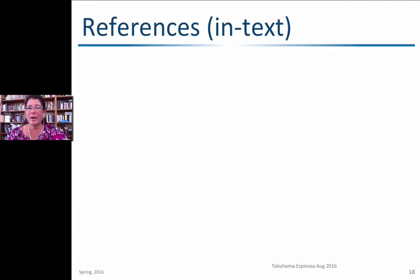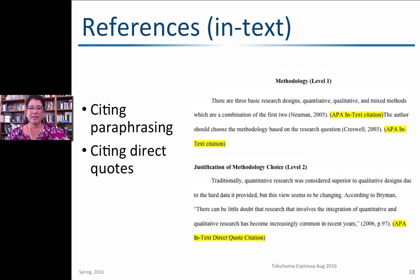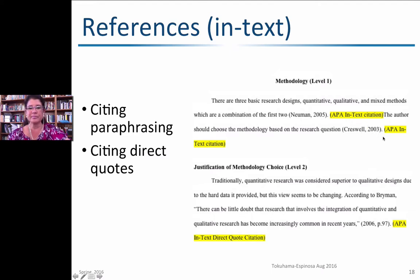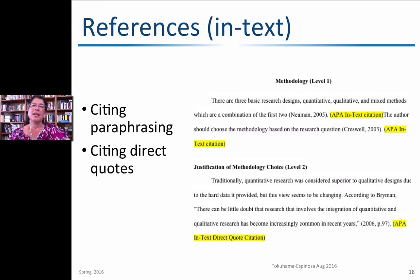The third big element of APA is how we reference things. An in-text reference is when you cite a source — we don't use footnotes, but we do include citations for paraphrasing and direct quotes. For a paraphrase, you parenthetically list the author's last name and year of publication. For a direct quote, you use quotation marks and must include three pieces of information: the author's last name, the year of publication, and the page number.